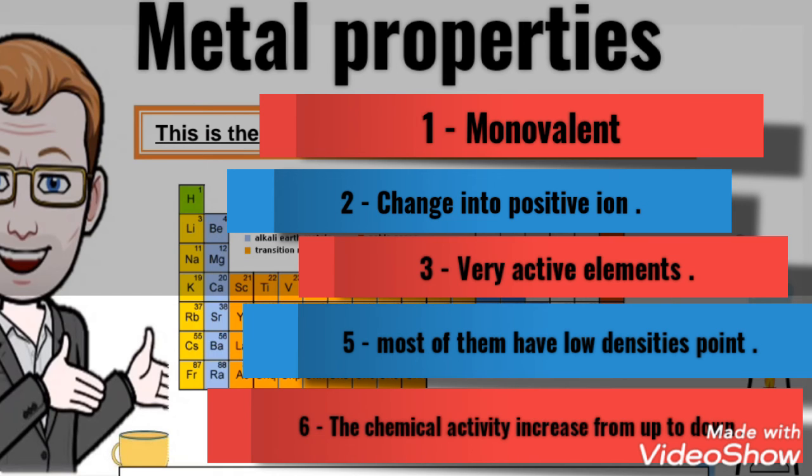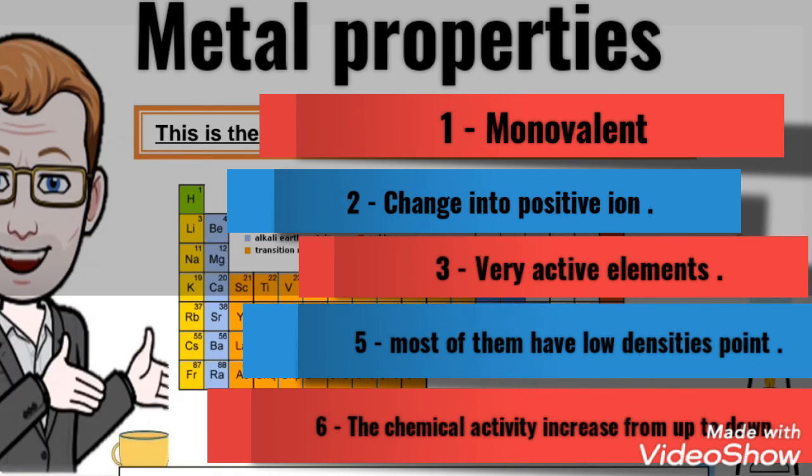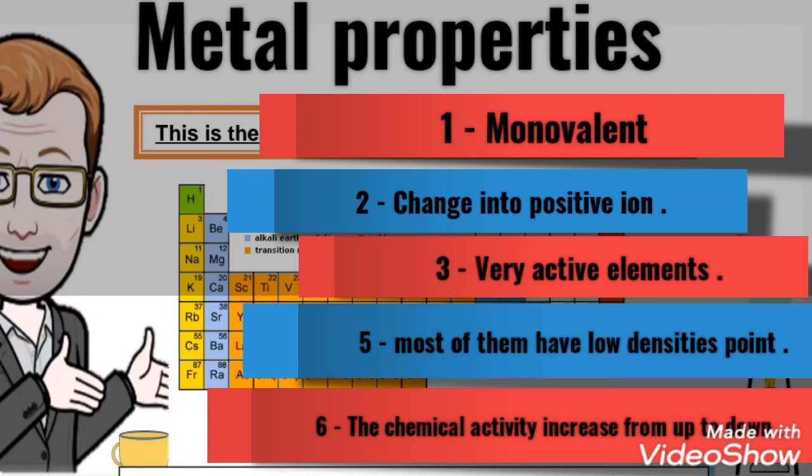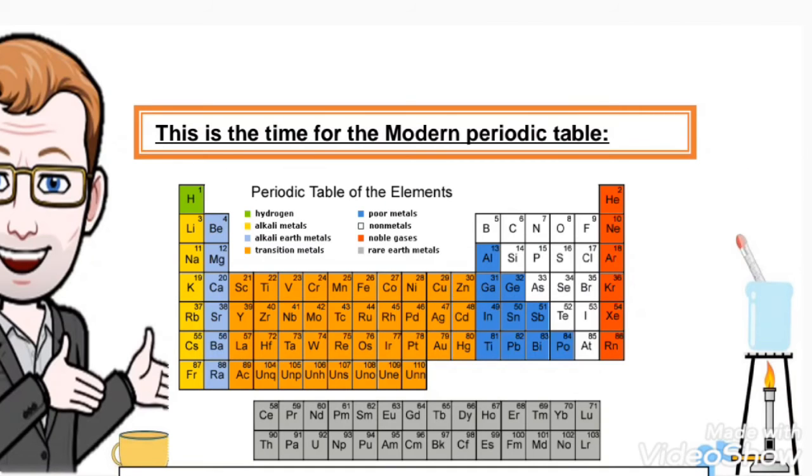Then we have another main group of the modern periodic table. Let's go to the halogen. The halogen represents group 7A.